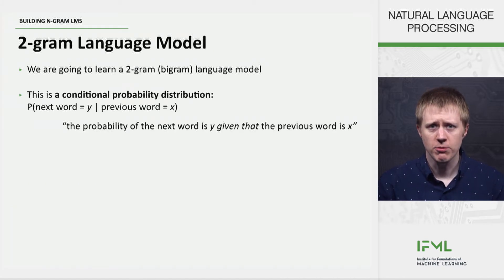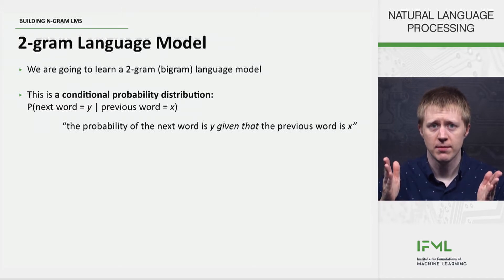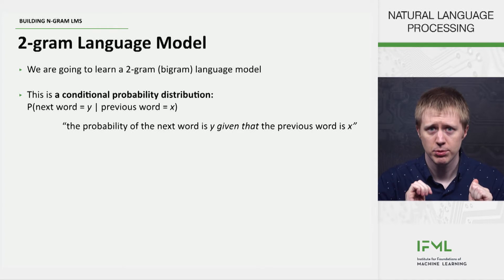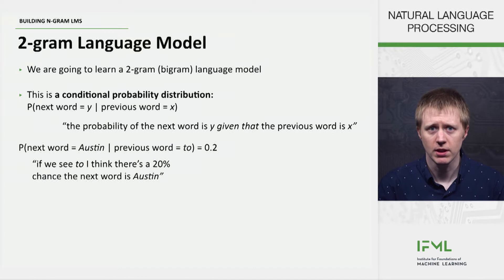We're going to represent these models as a conditional probability distribution. Don't worry if you haven't seen probability stuff before — we're going to walk through what all these pieces mean. What I've written here is p for probability, then parentheses: next word equals y, given previous word equals x. That vertical line means 'given.' This is a number representing the probability that the next word is y given that the previous word is x.